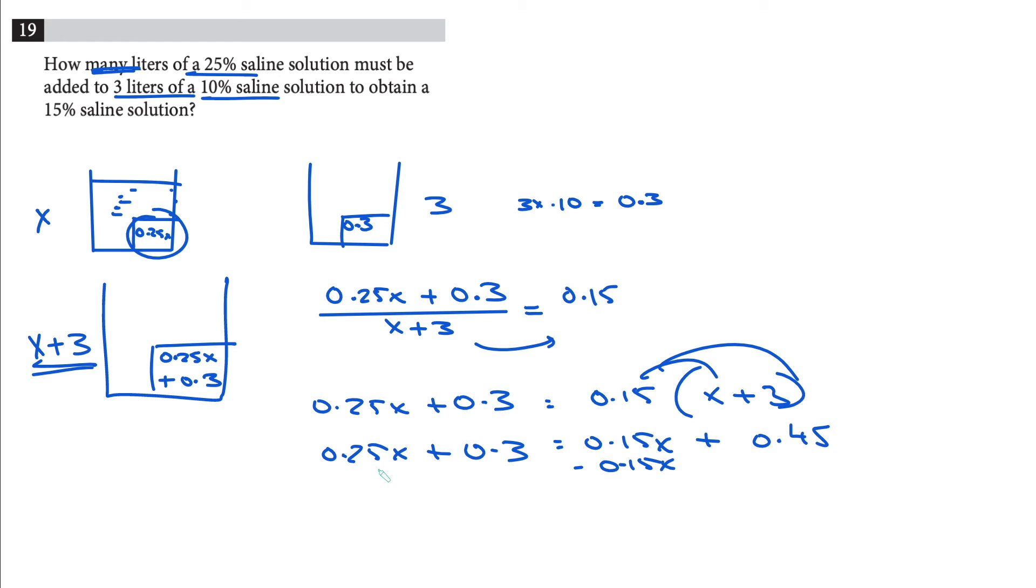And you move this guy to the other side, in other words you just subtract by 0.3. So you take minus 0.3 over here, so this is gone. And on your left now is 0.25 minus 0.15, which is 0.10x is equal to, all of this is gone, is equal to 0.15, right?